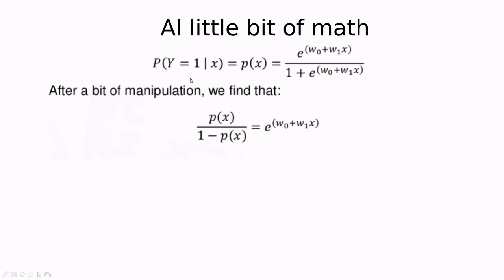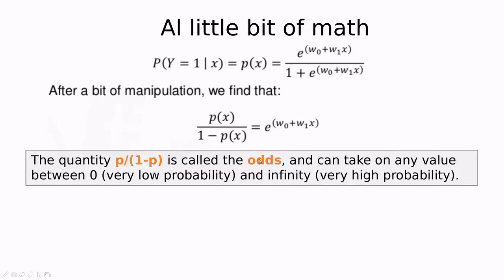Let's do a little bit of math. Take this formula — the probability of y equals one being this function — and after some manipulation, if we try to solve for the exponential, we get this expression. This p divided by one minus p is called the odds, and this name comes from gambling. Basically, if you say you have odds of five to one, that means you have a large probability of winning.